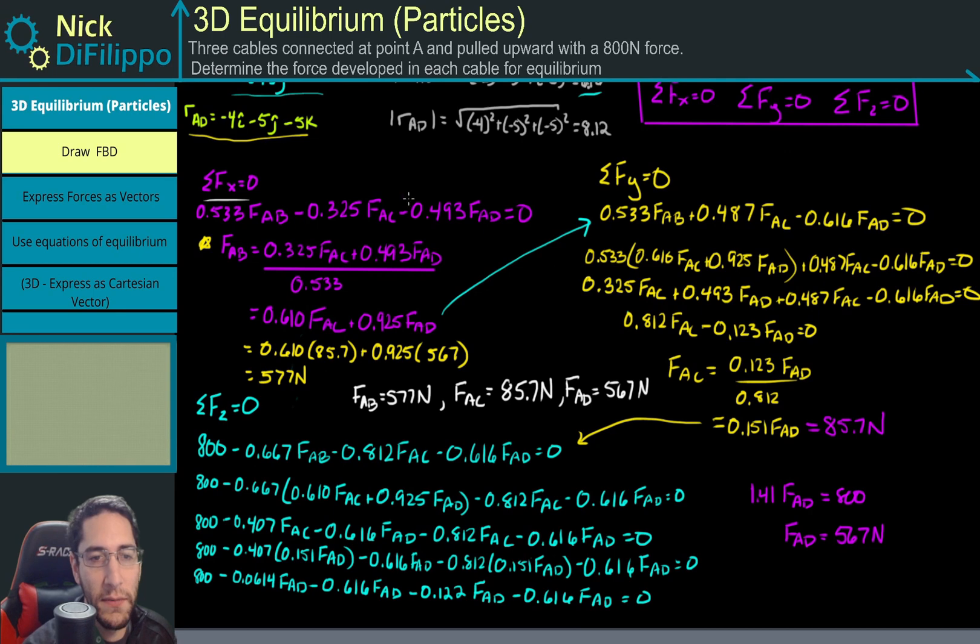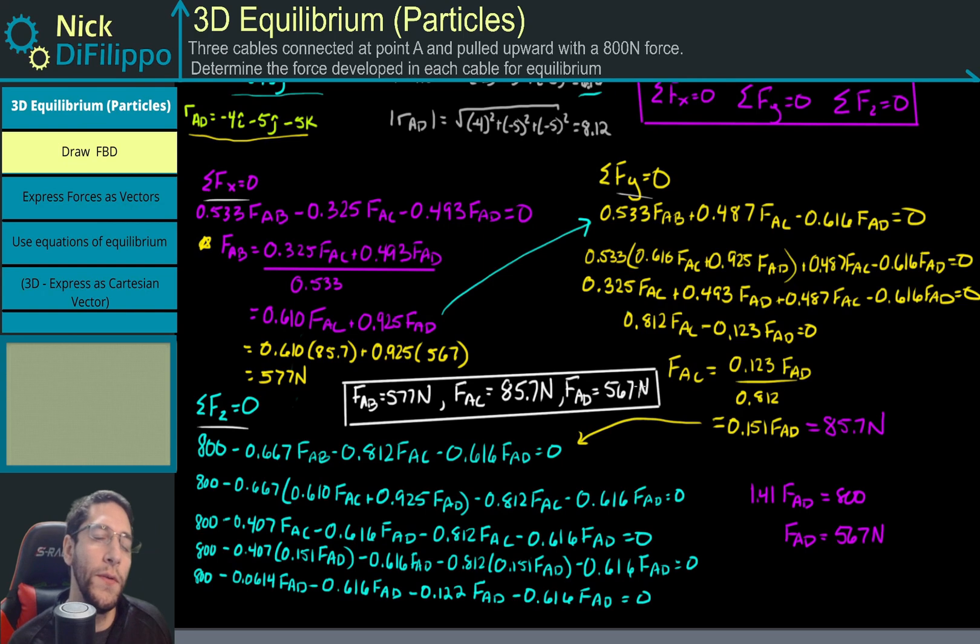We have the sum of forces in the X, Y, and Z. Then it's a whole algebra mess with substituting and back substituting. Eventually we get these answers right here. I want to keep these answers, but I told you I would show you a faster way of doing this. If your professor lets you use your calculator and these methods, it's going to save you a ton of time.